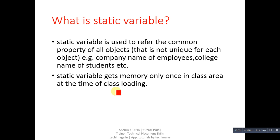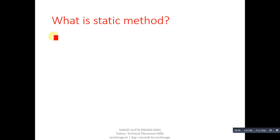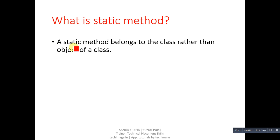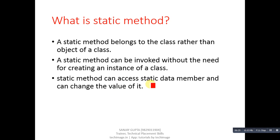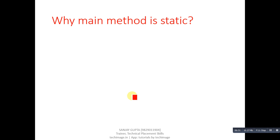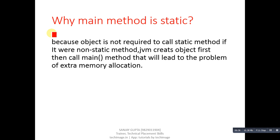What is a static method? A static method belongs to the class rather than to an object of the class. A static method can be invoked without creating an instance of a class, and it can access static data members and change their values. Why is the main method static? Because an object is not required to call a static method. If it were non-static, the JVM would create an object first, then call the main method, leading to the problem of extra memory allocation.